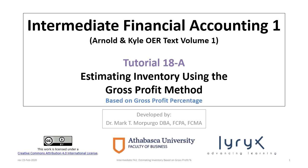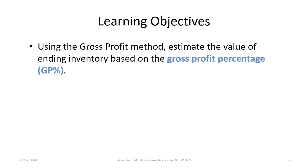Hello and welcome to Intermediate Financial Accounting 1, Tutorial 18A. This is the first of two tutorials focused on estimating ending inventory using the gross profit method. This tutorial will look at estimating inventory based on gross profit percentage, while Tutorial 18B will cover markup percentage. Our learning objective is to use the gross profit method to estimate inventory value based on the gross profit percentage, or GP percentage.